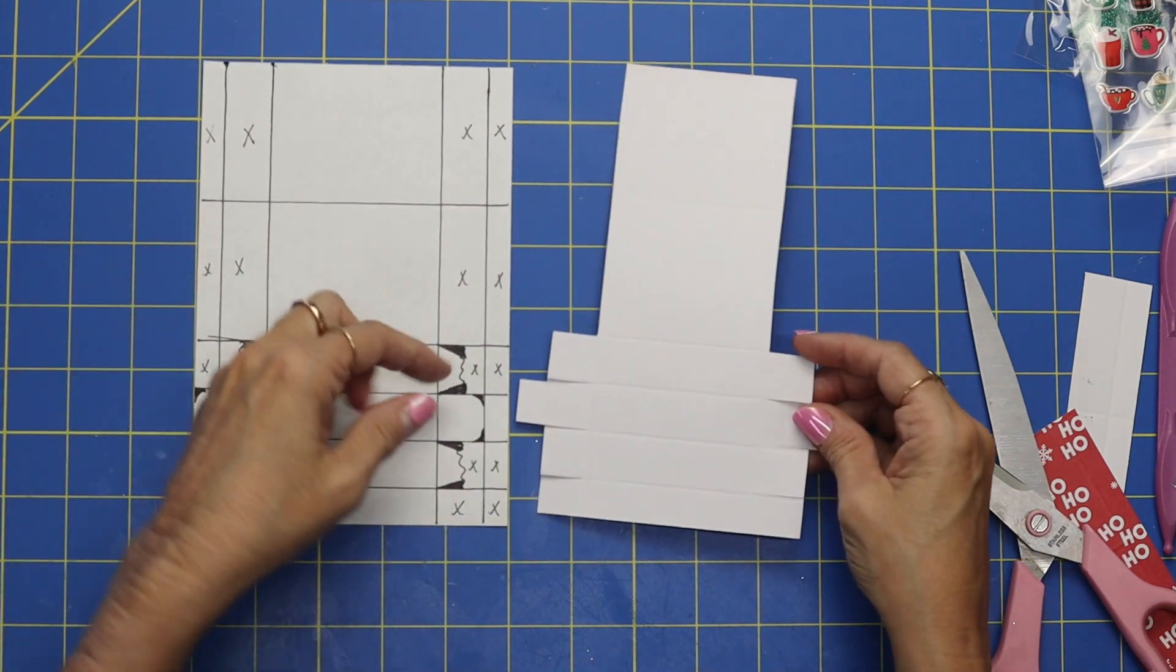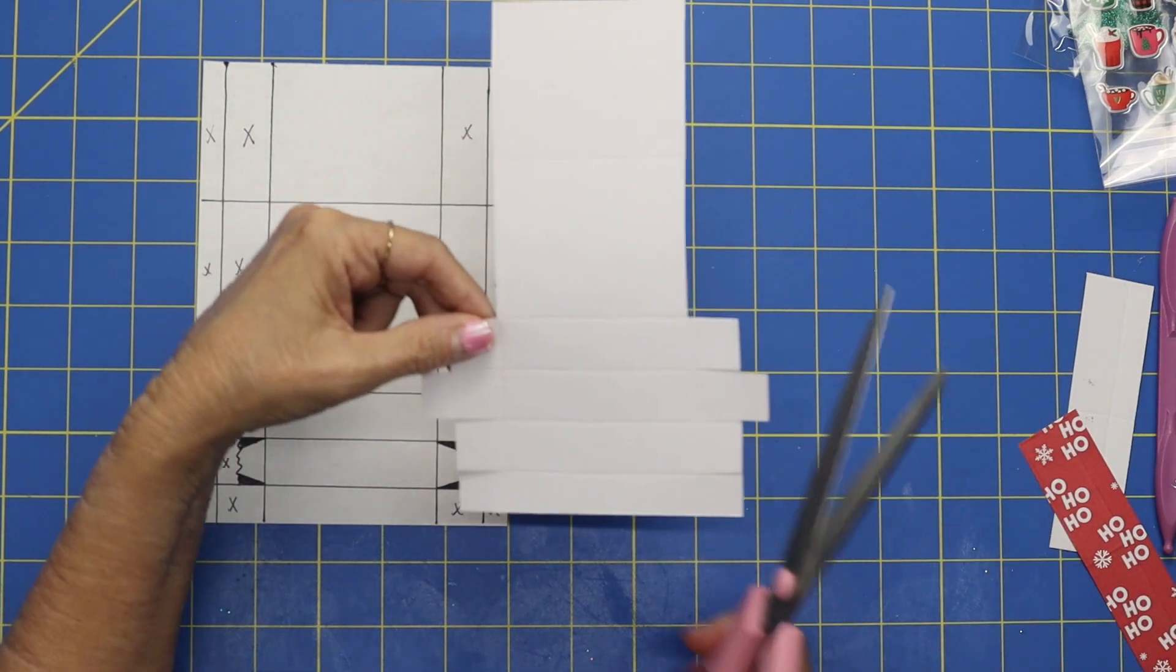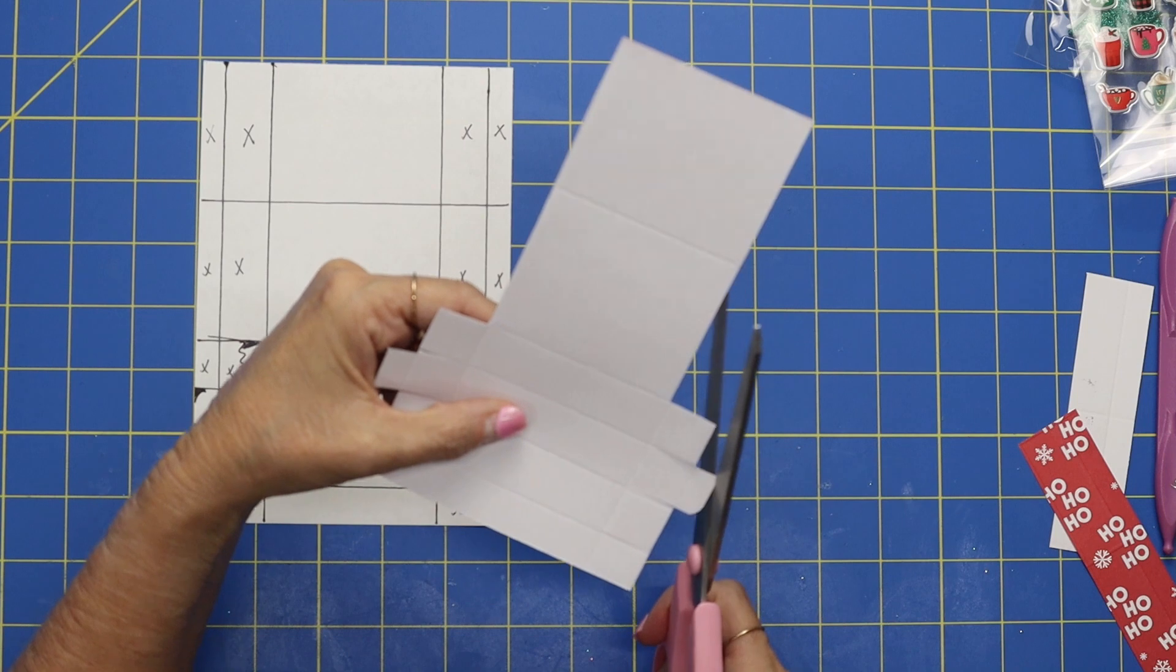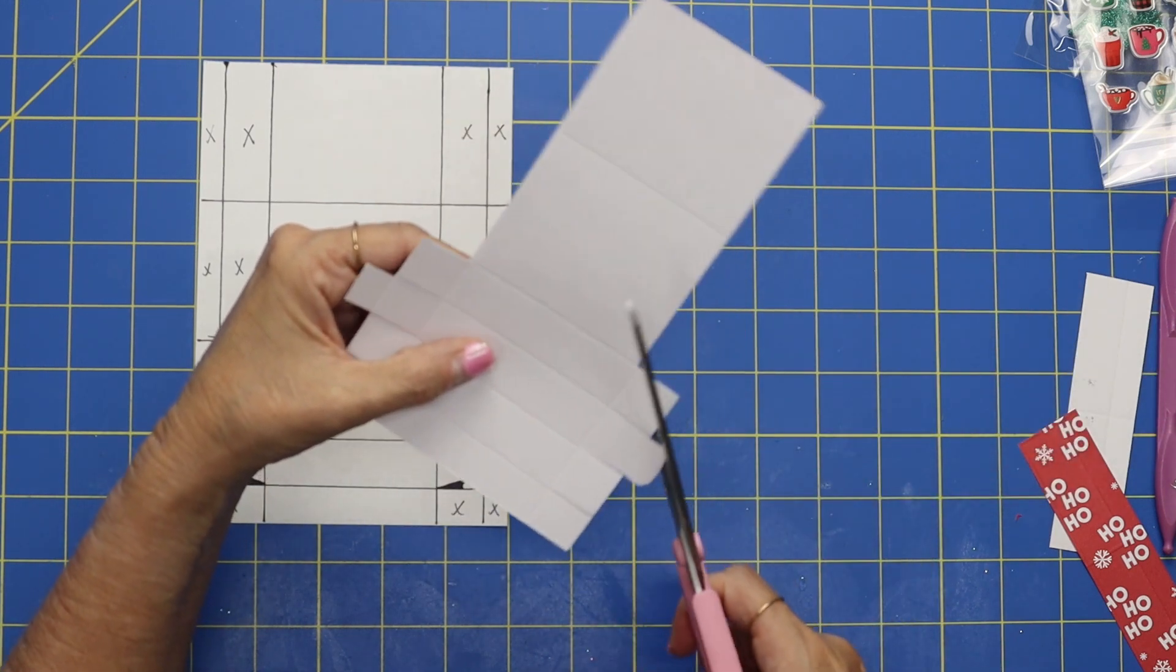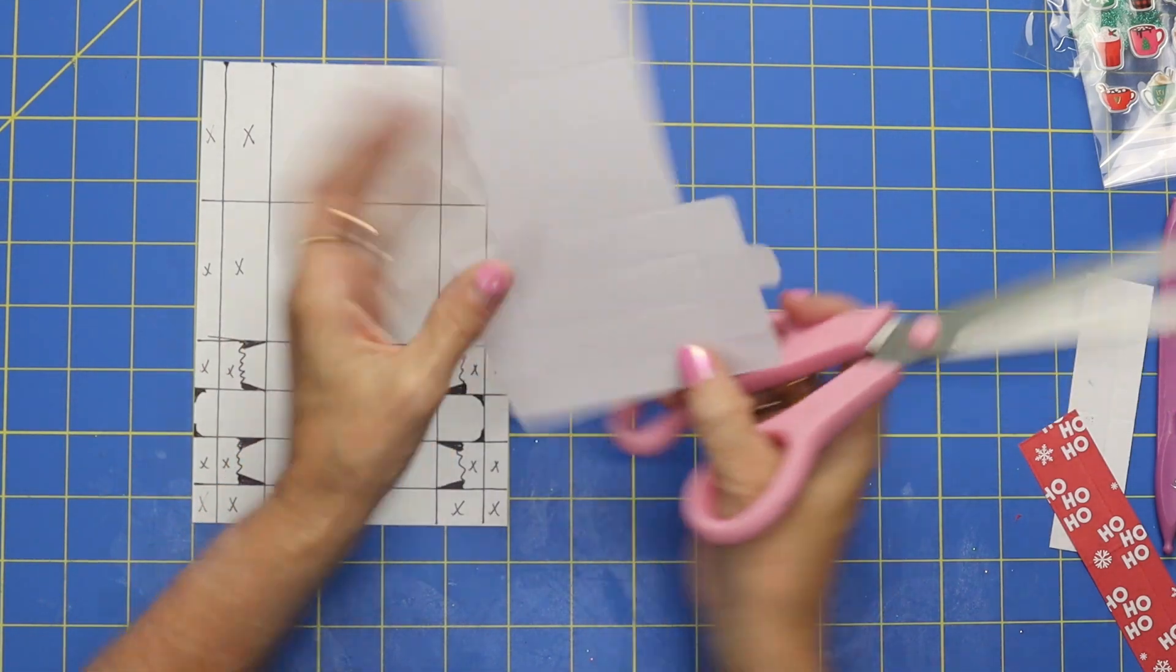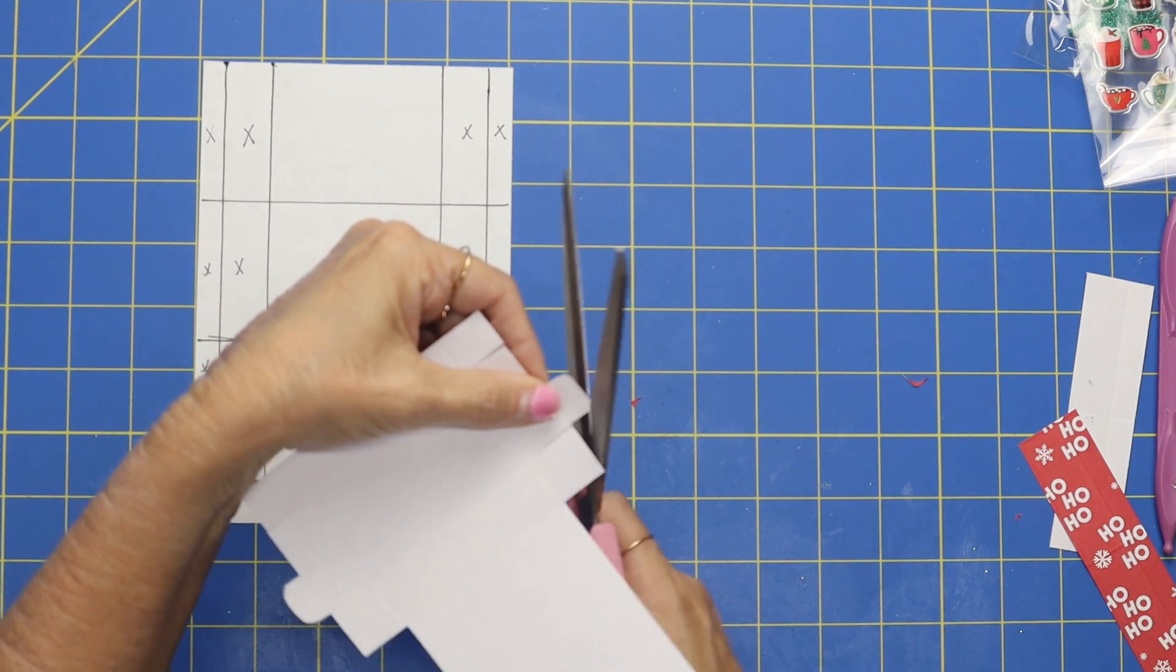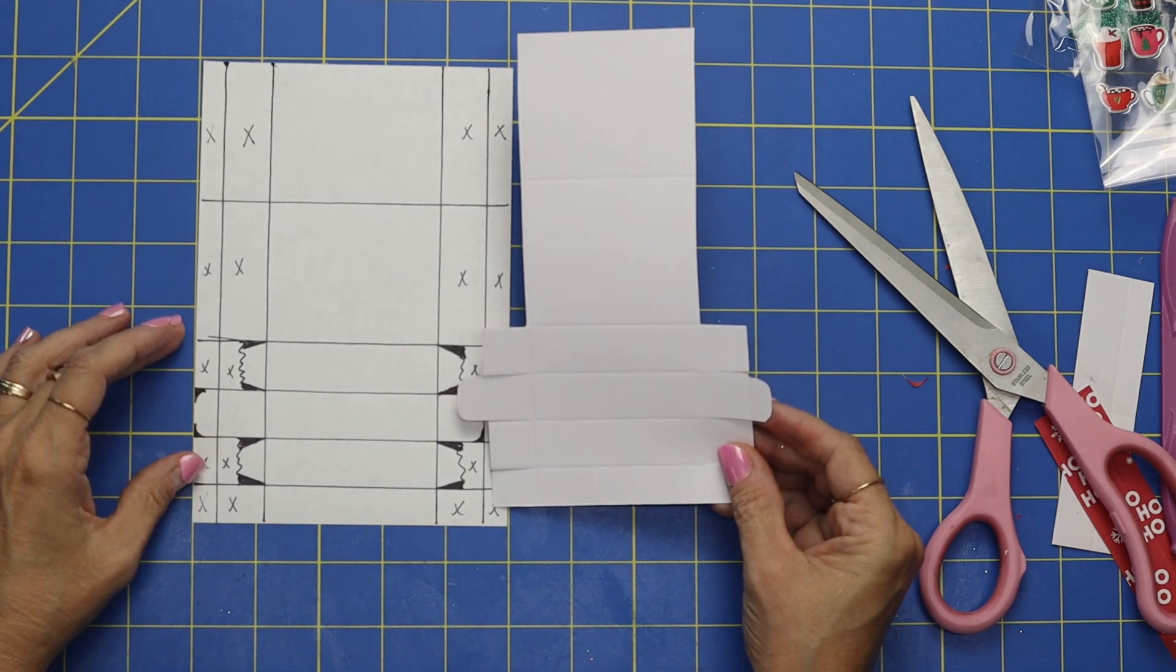Now on this part we're going to round these corners. Now if you have a corner rounder you can use that. I am just going to eyeball it. This is going to make our little tab that tucks in. So like I say if you want to use a corner rounder that's fine. I just kind of eyeballed it and that's on the large piece that is sticking up. And it doesn't have to be perfect, but do you kind of see what I'm saying?